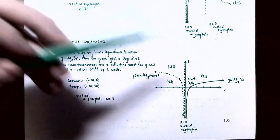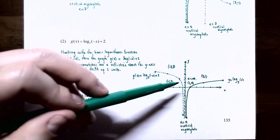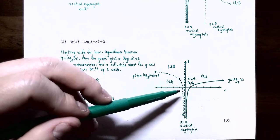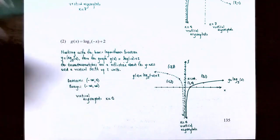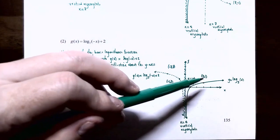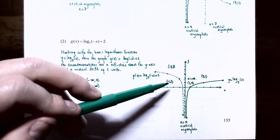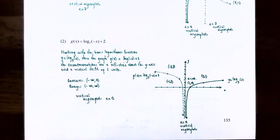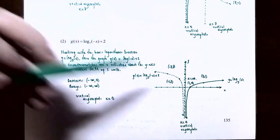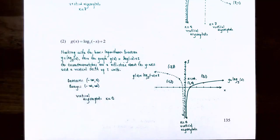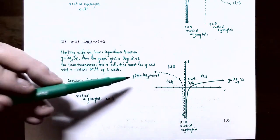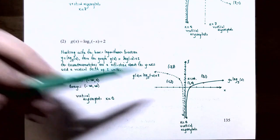The x-intercept 1 comma 0, after reflecting across the y-axis, becomes negative 1 comma 0, and after shifting up 2 units becomes negative 1 comma 2. The point 3 comma 1 reflects to negative 3 comma 1, then shifts to negative 3 comma 3. The graph of g of x passes through negative 1 comma 2 and negative 3 comma 3, increases without bound as x approaches negative infinity, and decreases without bound as x approaches 0 from the left side.